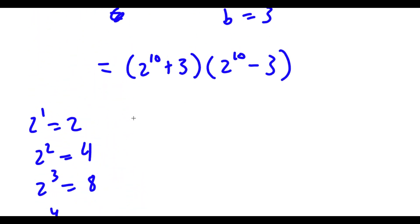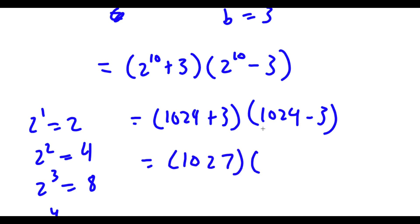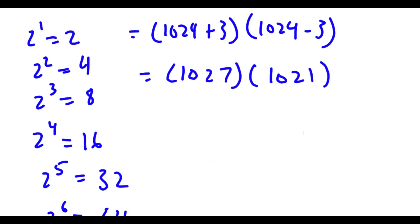So now I have 1024 plus 3, times 1024 minus 3. Now 1024 plus 3 is going to be 1027, and 1024 minus 3 is going to be 1021. So now I have 1027 times 1021.